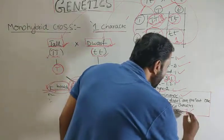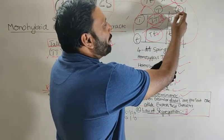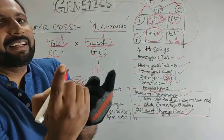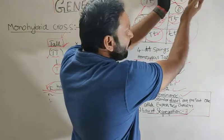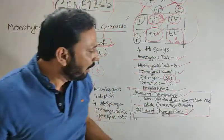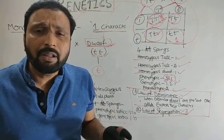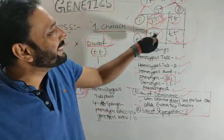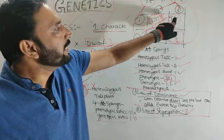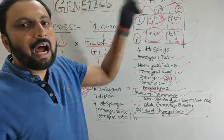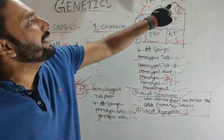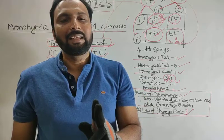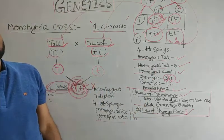The second law is the law of segregation. Look here — this is one gamete, this is another gamete. The gamete receives only one type of allele. There is no blending, there is no merging; the gamete receives only one type of allele. That is called the law of segregation. So based on the monohybrid cross, Mendel proposed two laws: law of dominance — when the plant is heterozygous, dissimilar alleles are present, and only one allele expresses the character; and law of segregation — the gamete receives only one type of allele, there is no blending. This is monohybrid cross. Thank you. Thank you to all.